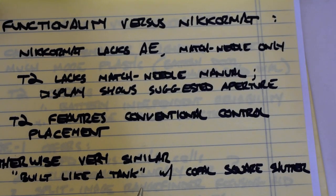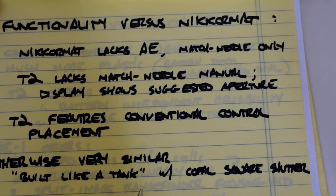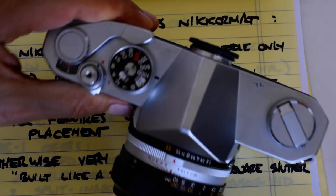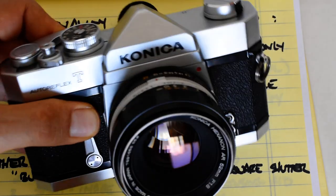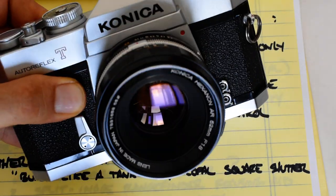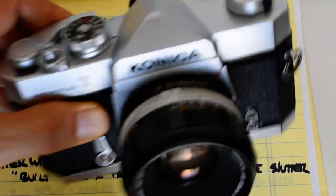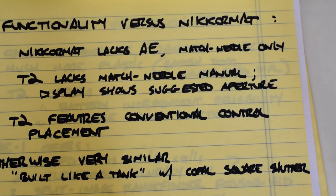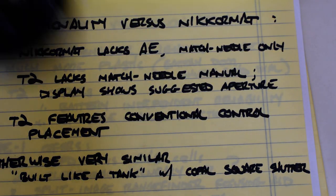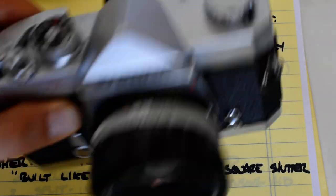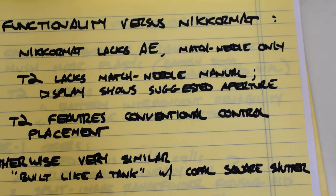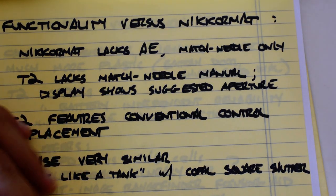So the T2 features conventional control placement as opposed to the Nycromat's. Otherwise they're very similar. These are built-like-a-tank cameras with Copal square shutters, and I think this is what I'm preaching. I'm preaching the gospel of these two cameras, the Autoreflex and Nycromat. I think this is what people should be investing in because they're gonna last. They will last forever. This camera is built like a brick outhouse. It is rock-solid, just like the Nycromats. I really think that the Autoreflexes and the Nycromats are the two best deals in 35 millimeter SLRs available today and they're worth investing in. You get it fixed up right, it'll last you. You won't have to do more work to it for quite a while.